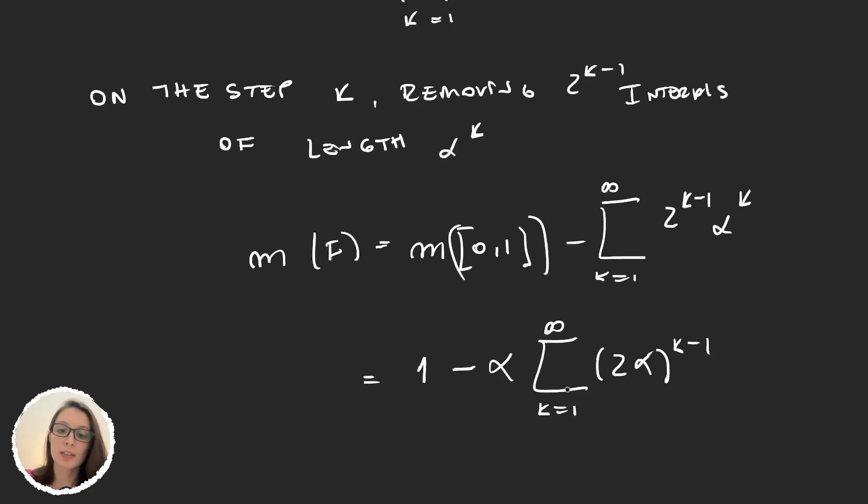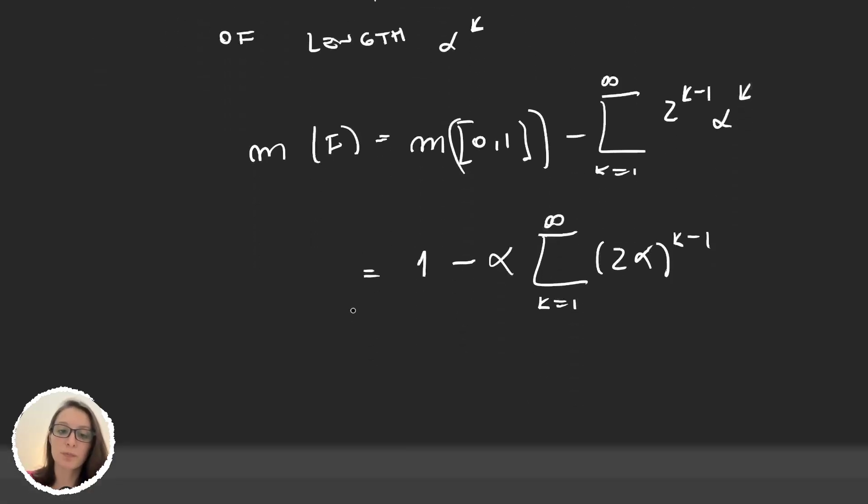And now I can just move the index to start from 0 and we will have 1 minus α times the sum from k equals 0 up to infinity. And this just adds 1 to the k inside the sum. So we will have k minus 1 plus 1, which is k.